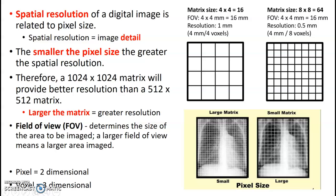Spatial resolution is really related to pixel size — how detailed is your image, what can you see? The smaller the pixel size, the greater your resolution. So an image with small pixels gives me better resolution. I want smaller pixels to get higher resolution. You're also going to have matrix size options, and you always want the bigger matrix but smaller pixels for greater resolution.